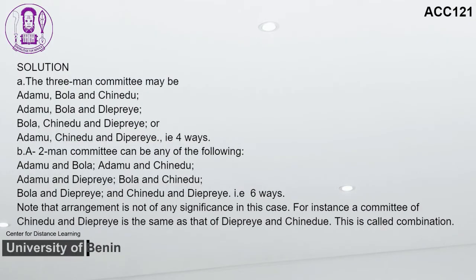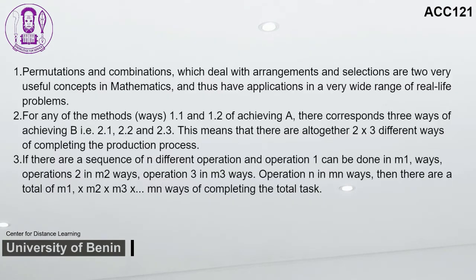Error of commission occurs when a transaction is posted to the wrong account within the correct class of account. For instance, a credit sale of ₦3,000 from Mrs. Abike is correctly debited in the sales account but wrongly credited to the wrong customer's account. Error of principle occurs when a transaction of a particular class of account is posted to another class, for example, vehicle maintenance expenses posted into the fixed asset account. Error of original entry results from recording an incorrect amount in the subsidiary account, which is also called transposition error — for example, a credit sale of ₦1,200 recorded as ₦1,020.